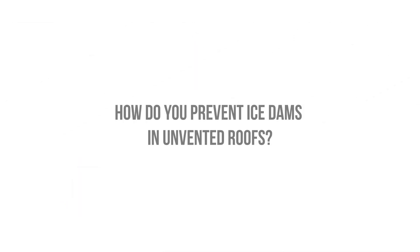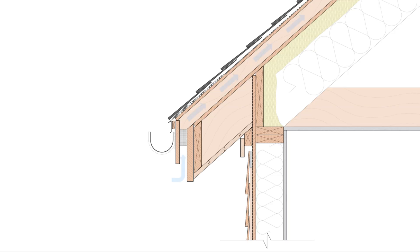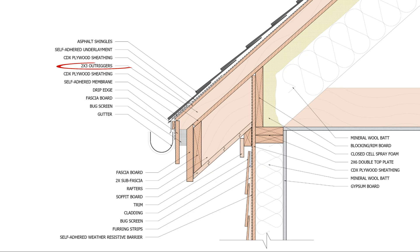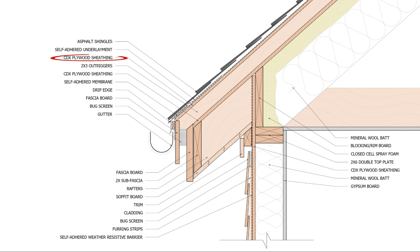So, what can we do to prevent ice dams in unvented, conditioned attics and roofs? It's simple — we build a vented roof over the conditioned roof, sometimes just called a vented over roof. This uncouples the heat loss of the building from the surface of the roof, keeping the sheathing and the roofing cold and closer to outdoor temperatures. We simply install furring strips over the roof sheathing or over the rigid insulation, providing continuous air intakes at the soffits or fascias, and vents at the top. We then install an additional layer of sheathing for a fastening base, a vapor permeable underlayment, and the final roofing material.